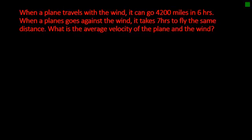When a plane travels with the wind, it can go 4200 miles in 6 hours. When a plane goes against the wind, it takes 7 hours to fly the same distance. What is the average velocity of the plane and the wind? Remember that distance equals rate times time. Whether we go with the wind or against the wind, it's the same 4200 miles in varying amounts of time.